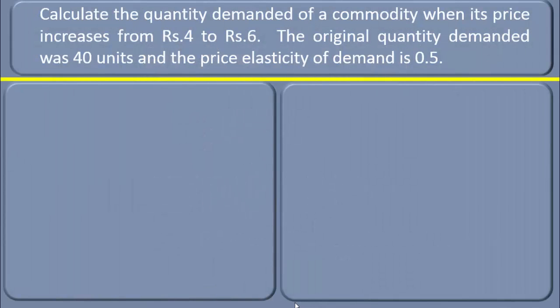Well, here is a problem we have to solve using percentage method. Calculate the quantity demanded of a commodity when its price increases from 4 rupees to 6 rupees. The original quantity demanded was 40 units and the price elasticity of demand is 0.5.